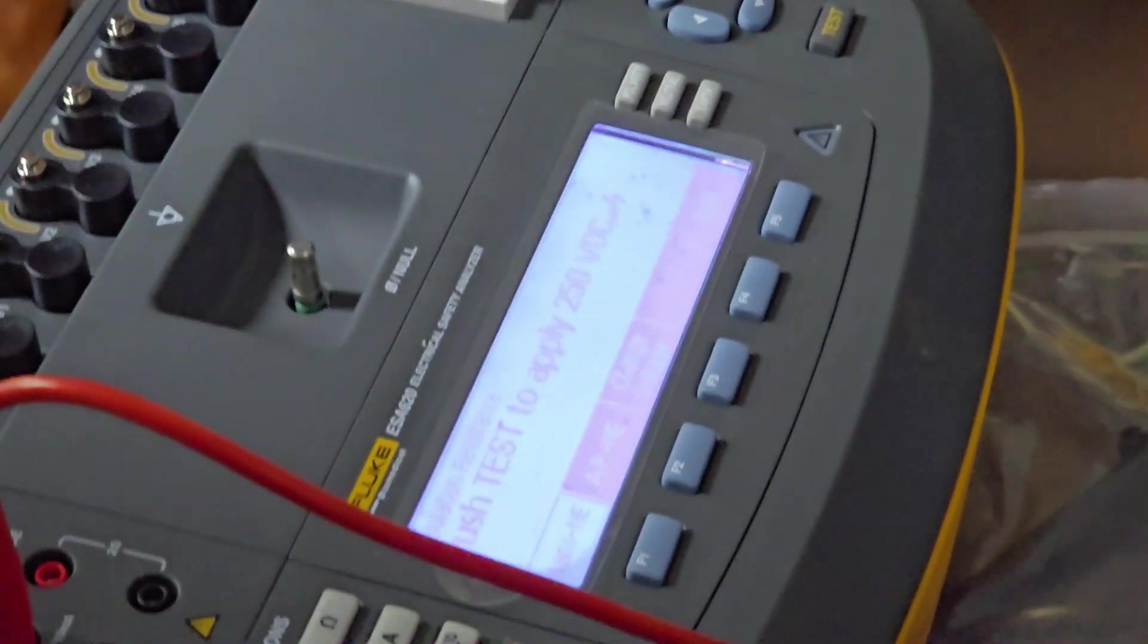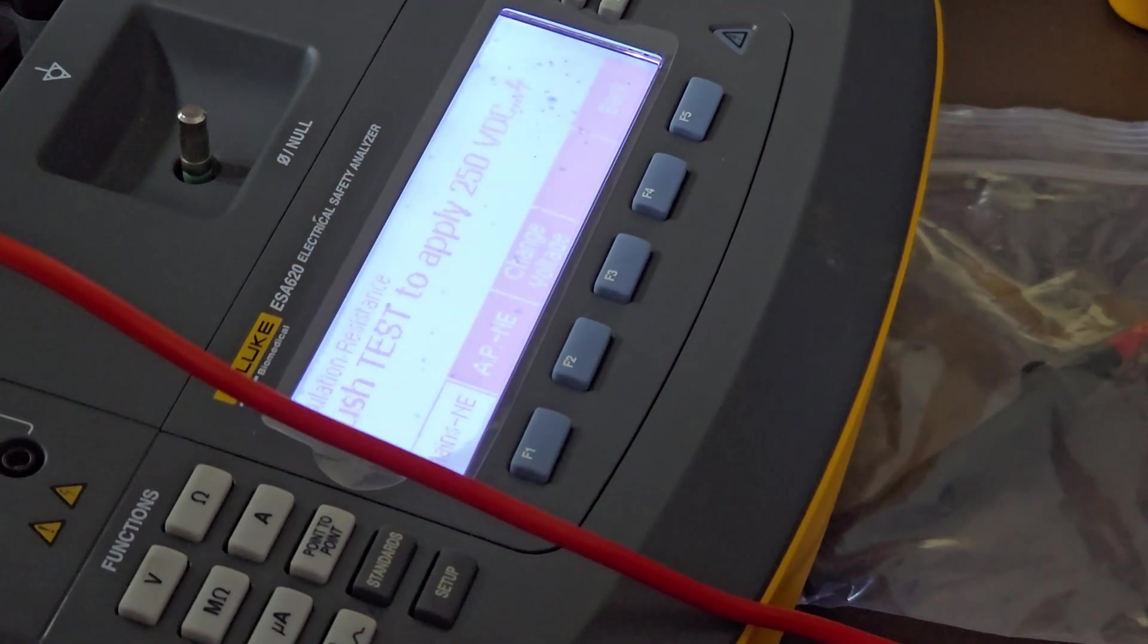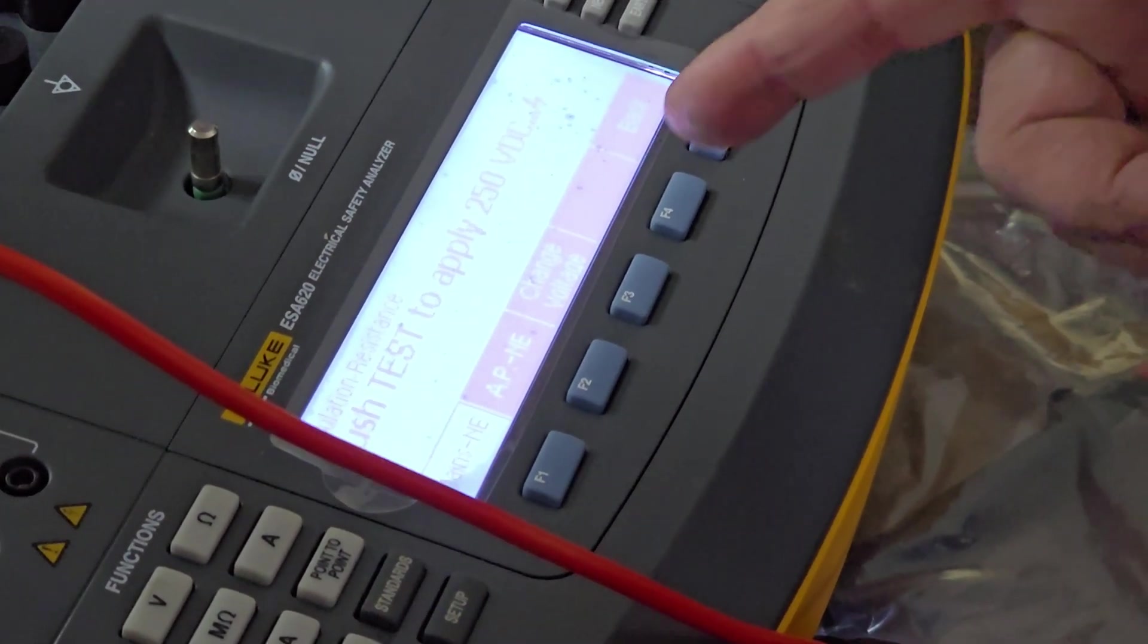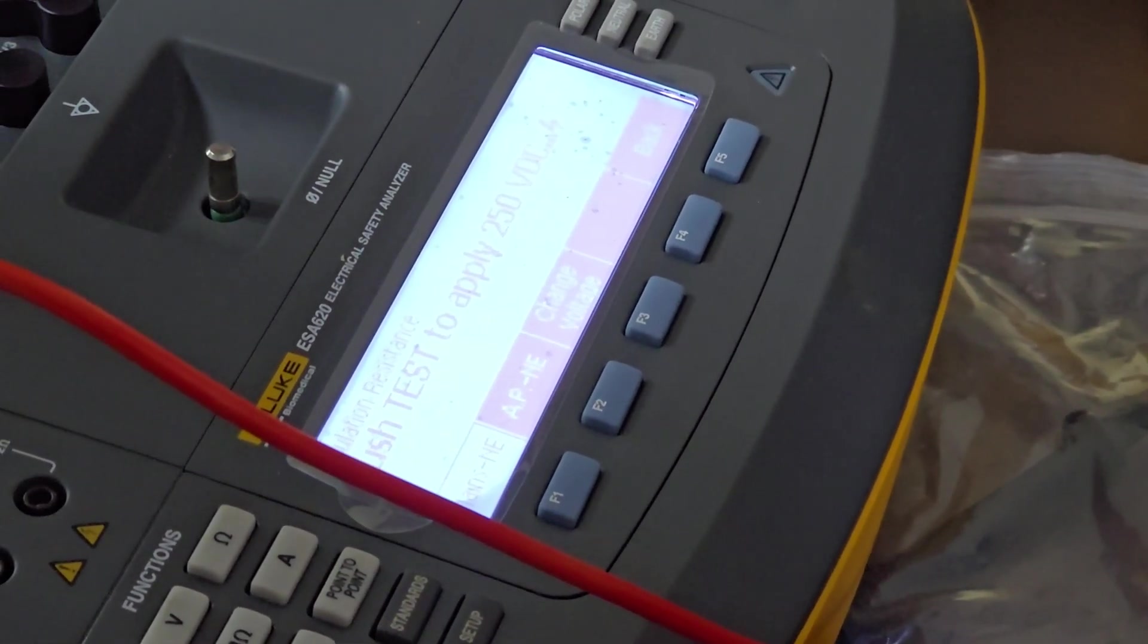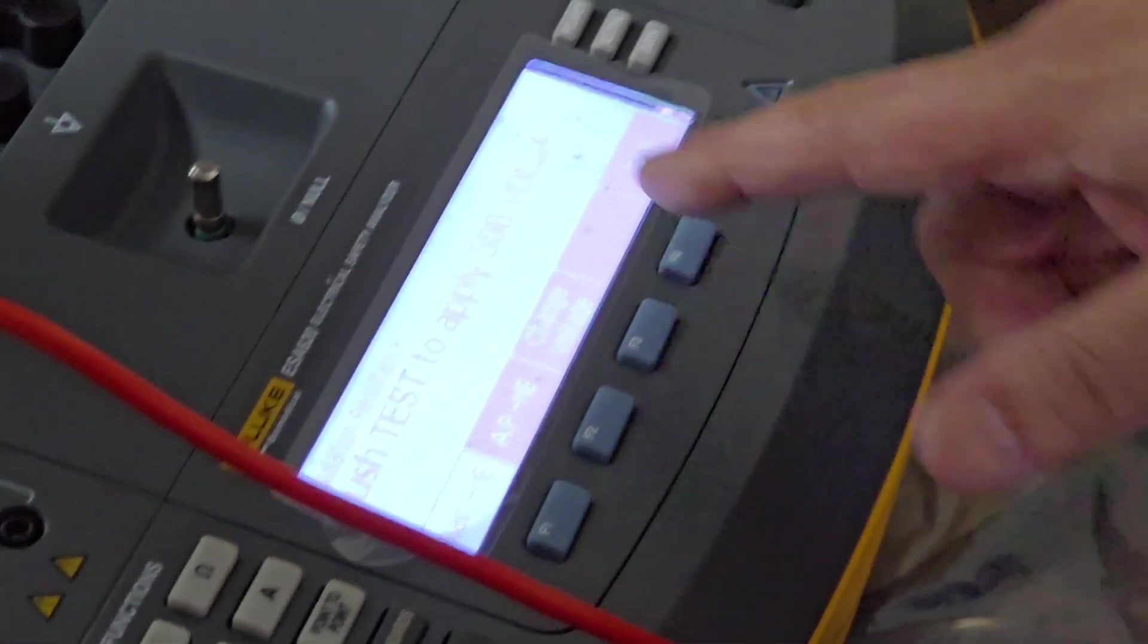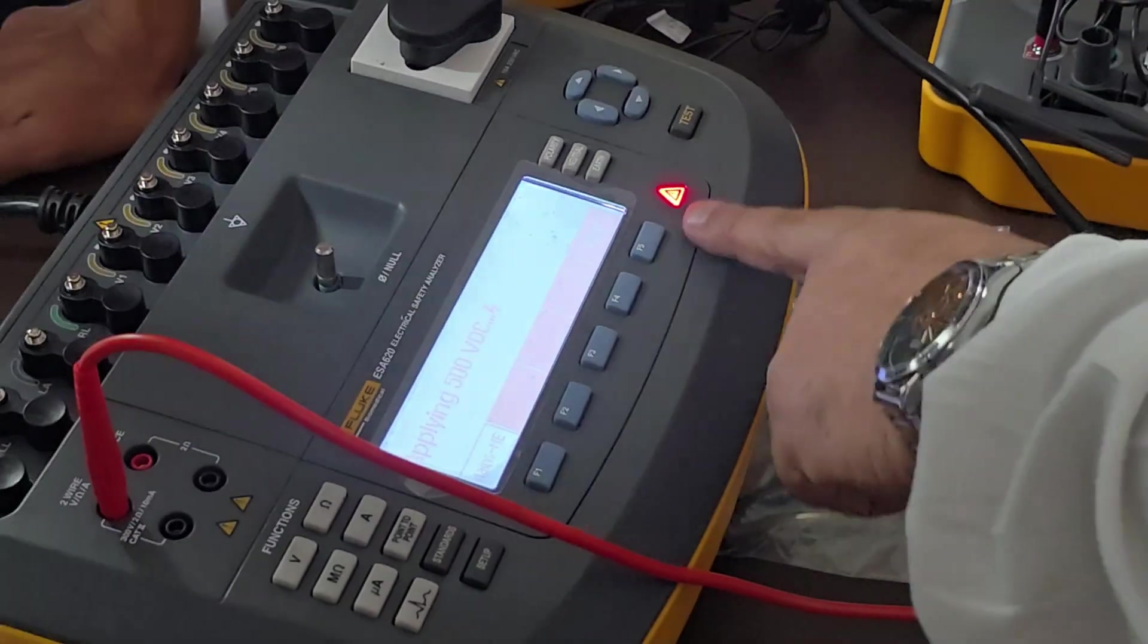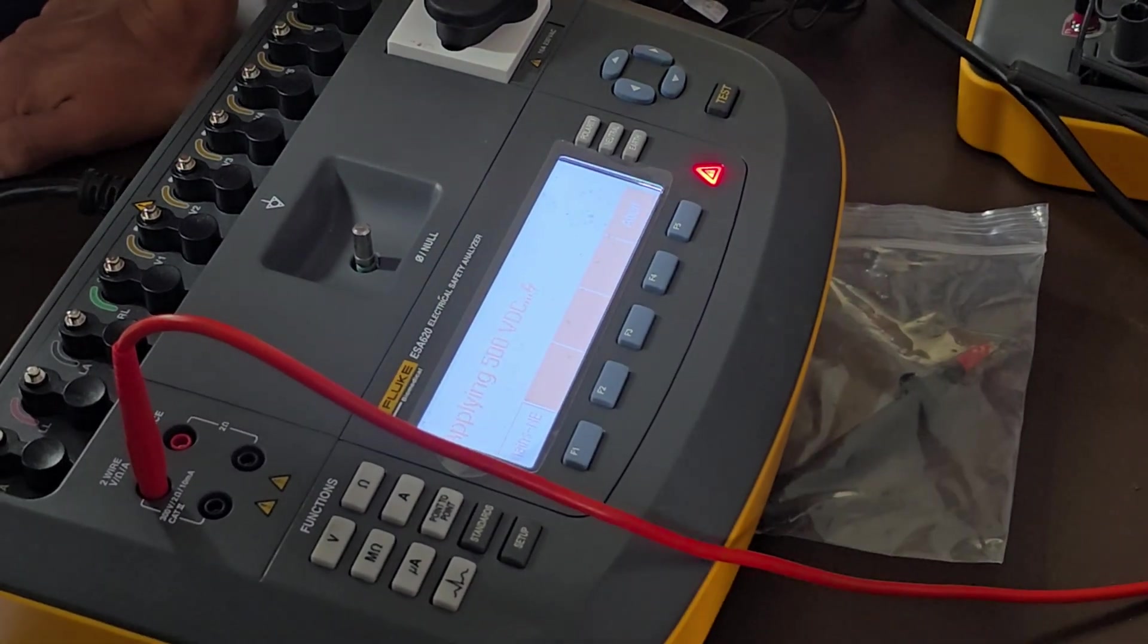If there is any product which you are not confident, see the manual, tell their engineer, can we put 250 or 500? Because otherwise what will happen, this will go up. So you have to be sure. So let us do it 500. Then start test. Don't touch, because when it is showing red, it is giving high voltage. Just wait.